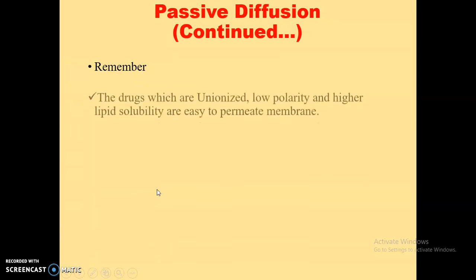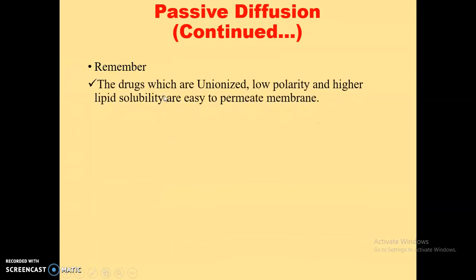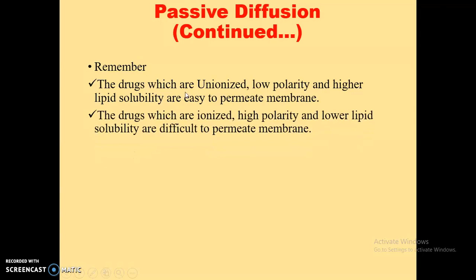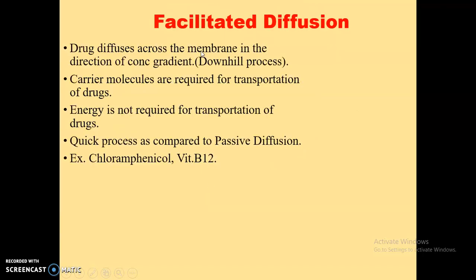Remember for passive diffusion: drugs that are unionized — that is, lipid-soluble, with low polarity and higher lipid solubility — are easily permitted through the membrane. Whereas, on the other hand, drugs that are ionized — that is, water-soluble, with high polarity and lower lipid solubility — are difficult to permit through the membrane.